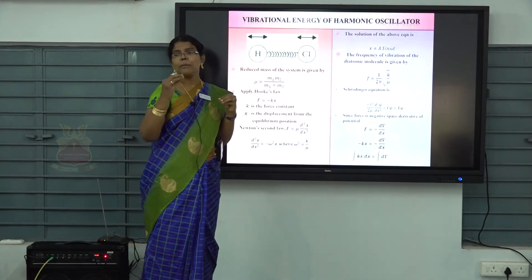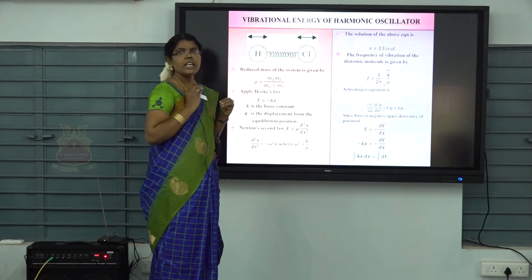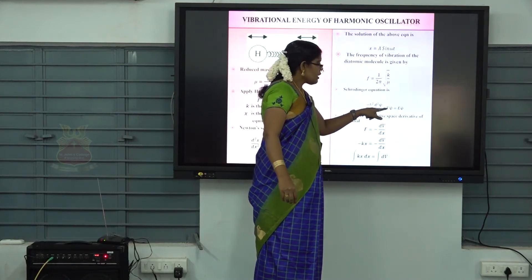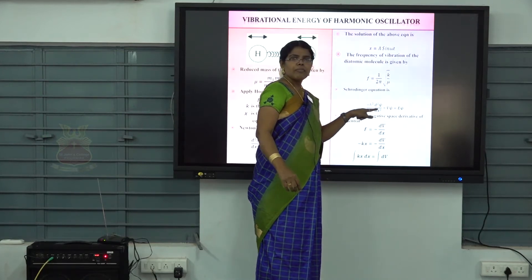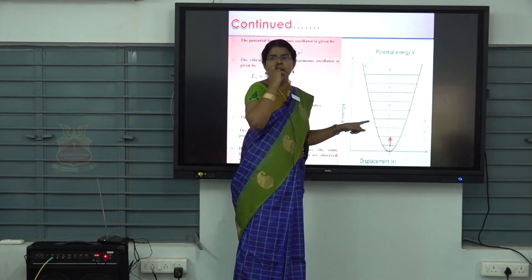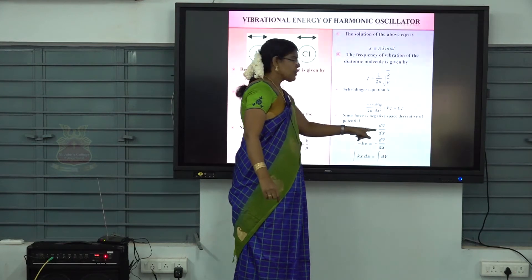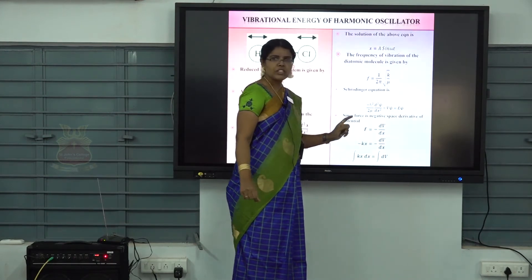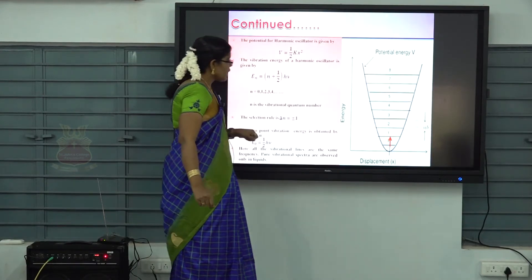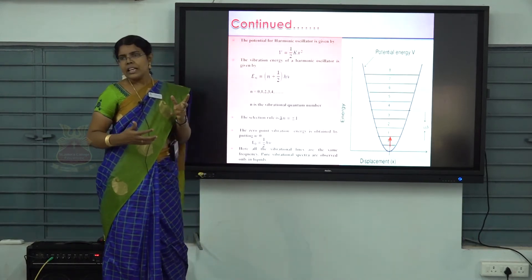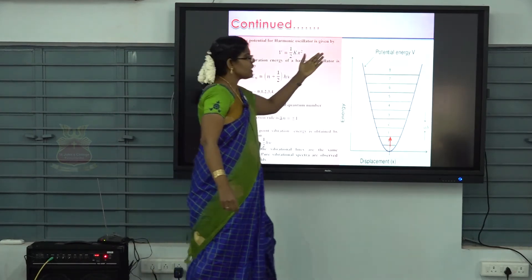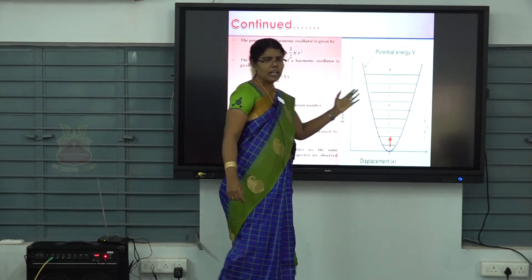Our aim is to determine vibrational energy using the Schrödinger wave equation, where V is the potential energy and E is the total energy. We find potential energy using the relation F = −dV/dx. Equating with Hooke's law, rearranging, and integrating gives V = ½kx², which is the displacement equation of a parabola. A graph between potential energy V and displacement x gives a symmetric parabola.